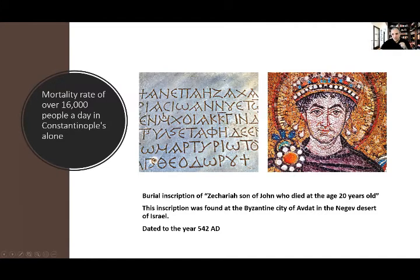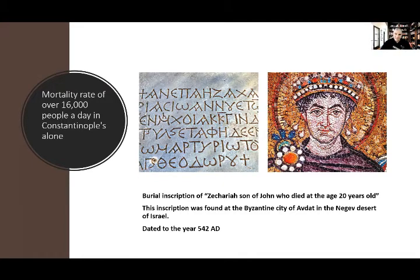This inscription here — next to Justinian — was found in a tomb of a man named Zechariah, son of John, who died at age 20. This tombstone was found in a church in the Nabataean city of Avdat. Most people are familiar with the Nabataean capital of Petra, the Red Rock. Avdat was actually the largest Nabataean city — kind of like Washington versus New York. We see a major decline in population across the Byzantine Empire, a decline that caused very significant changes in human history.